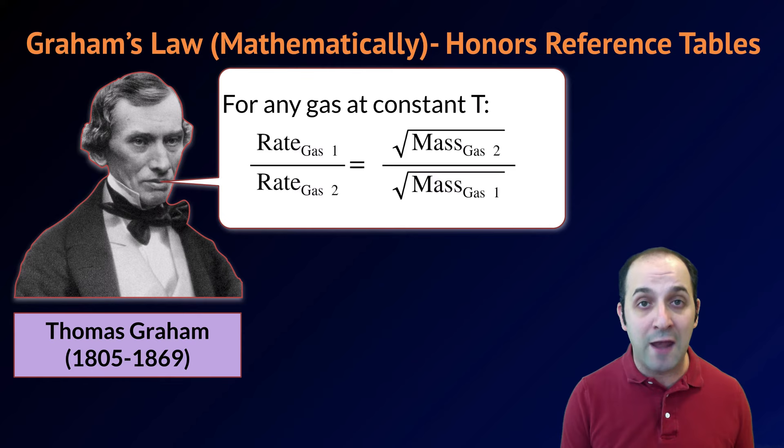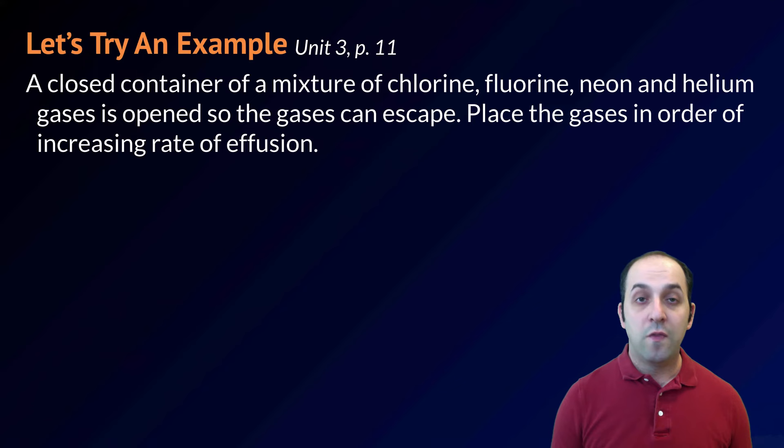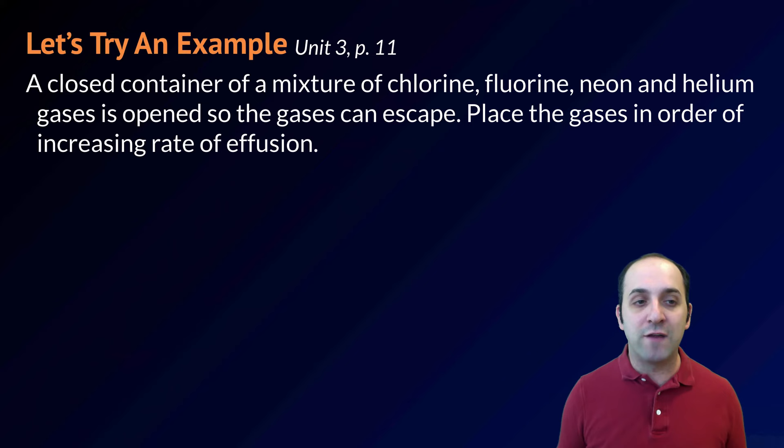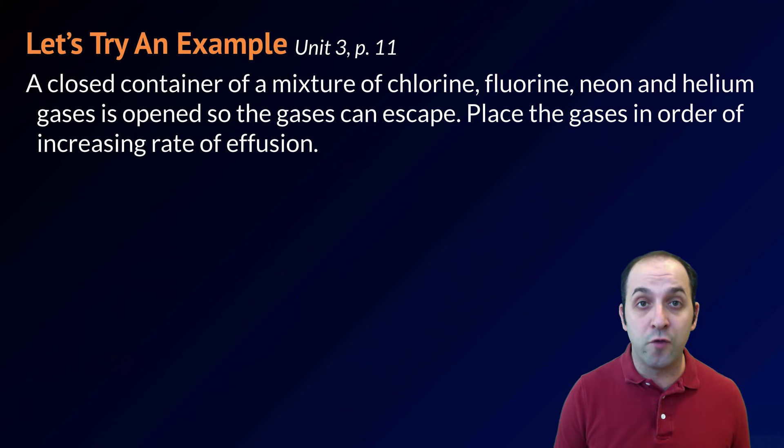Let's look at a couple of Graham's Law problems right now to see how they work. This problem is on page 11 of your unit 3 packet. A closed container of a mixture of chlorine, fluorine, neon, and helium gases is opened so that the gases can escape. Place the gases in order of increasing rate of effusion. Take a moment and see if you can solve this problem on your own, and then let's go through the solution together.